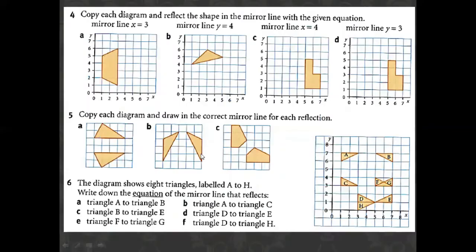Question four: if you have a mirror line where x equals 3, first find where x equals 3 on the x-axis. Here it is at position 3, so you draw the mirror line there, and then draw the same shape on the other side.